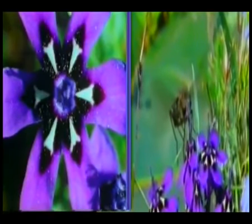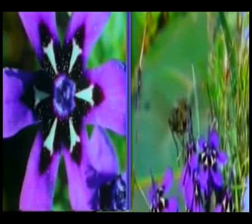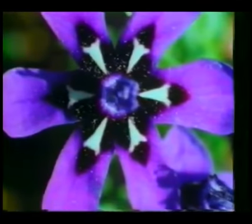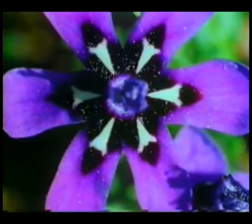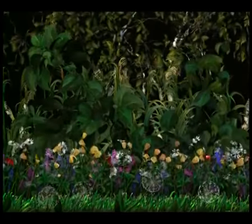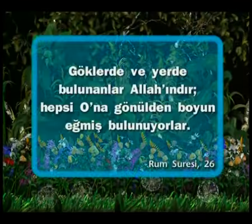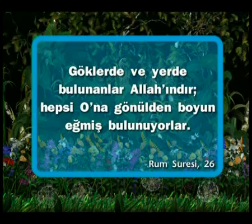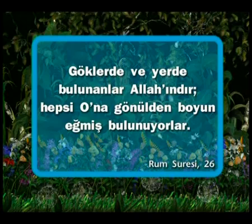Çiçeği ve böceği birbiriyle uyumlu özelliklerde yaratan yüce Allah'tır. Allah, her canlının sahip olduğu özellikleri bilir ve onlara en uygun özellikleri verir. Kutsal kitabımız Kur'an-ı Kerim'de Allah bu gerçeği bize şöyle bildirir: 'Göklerde ve yerde bulunanlar Allah'ındır. Hepsi ona gönülden boyun eğmiş bulunuyorlar.'